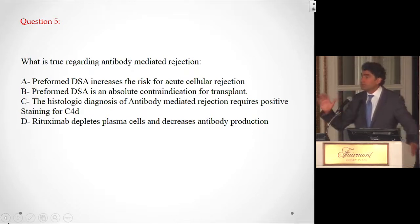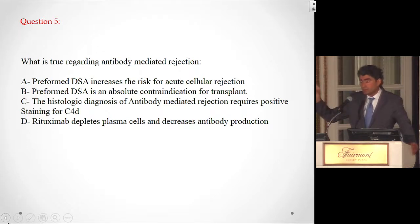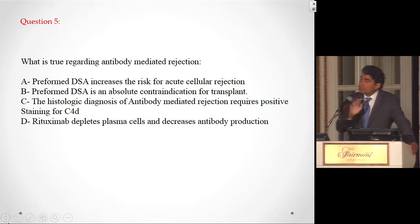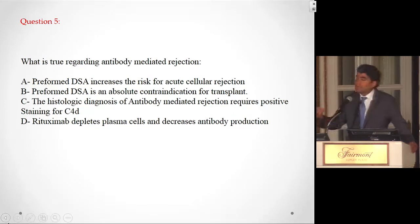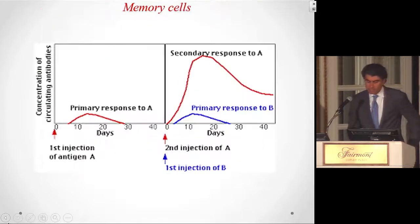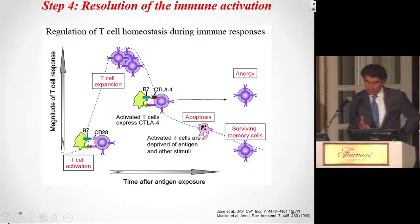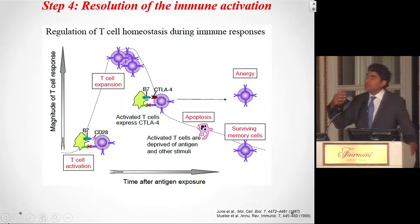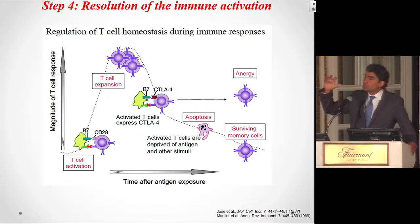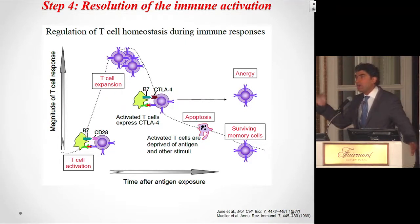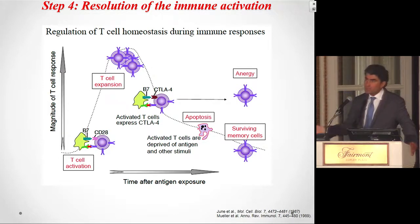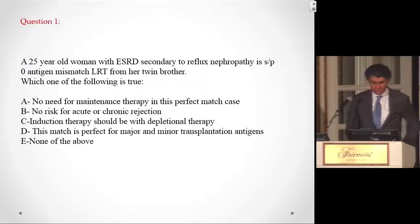Preformed DSA increases the risk of acute cellular rejection — that is true, for the same reason: T cells are activated first, producing the DSA, so T cell memory also exists. Preformed DSA is not an absolute contraindication. The histologic diagnosis of antibody-mediated rejection does not require positive C4D staining — C4D-negative antibody-mediated rejection exists. Rituximab does not deplete plasma cells — when B cells differentiate into plasma cells, they downregulate CD20 expression, so rituximab depletes only memory and precursor B cells. Bortezomib was introduced for antibody-mediated rejection treatment precisely because it acts on plasma cells. After immune activation, T cells express co-inhibitory molecules like CTLA-4, PD-1, TIM-3, and LAG-3, which suppress T cells and explain why rejection risk decreases over time — though this is reversible if immunosuppression is reduced.